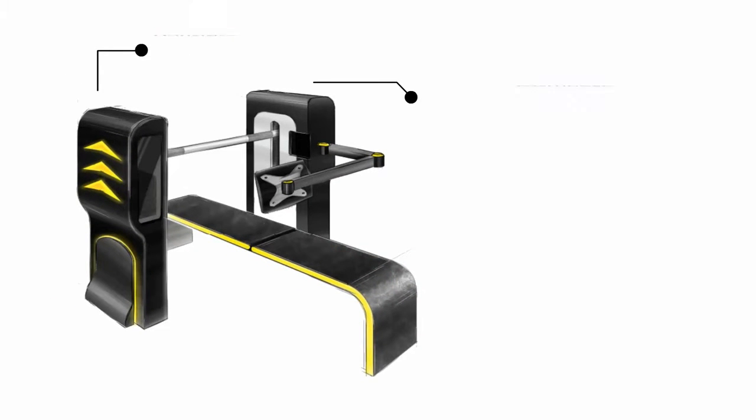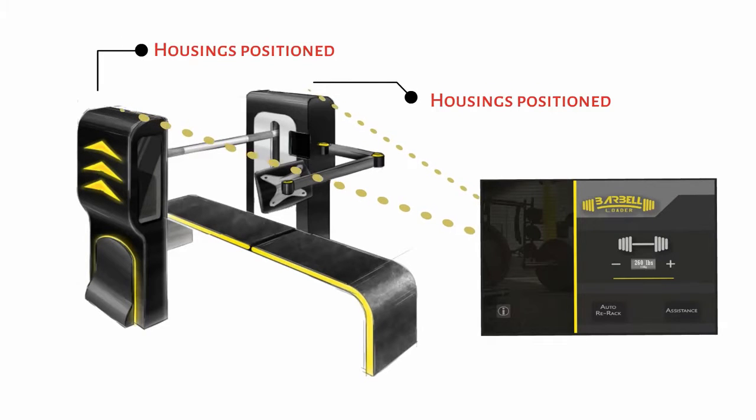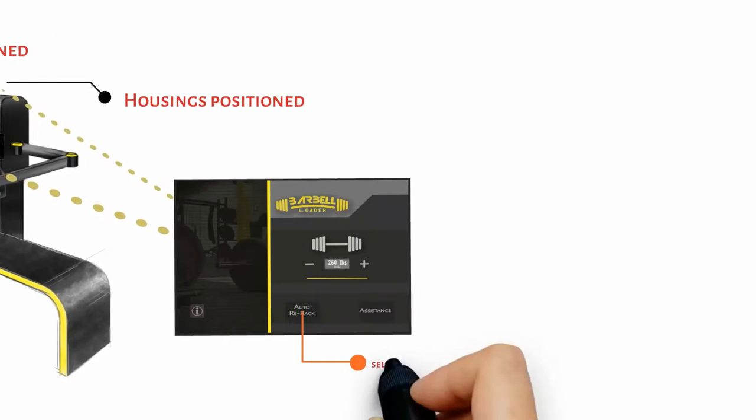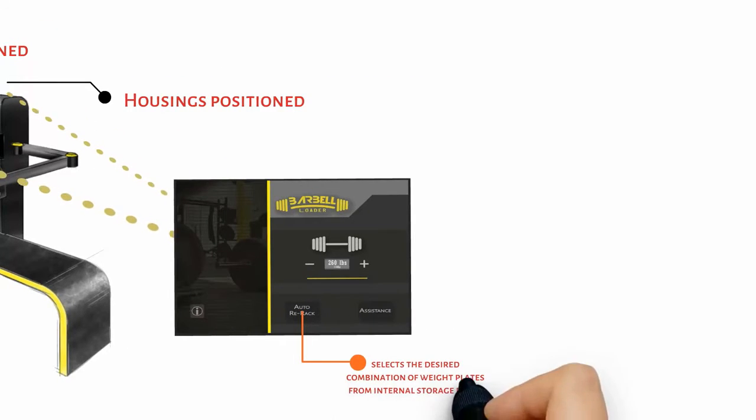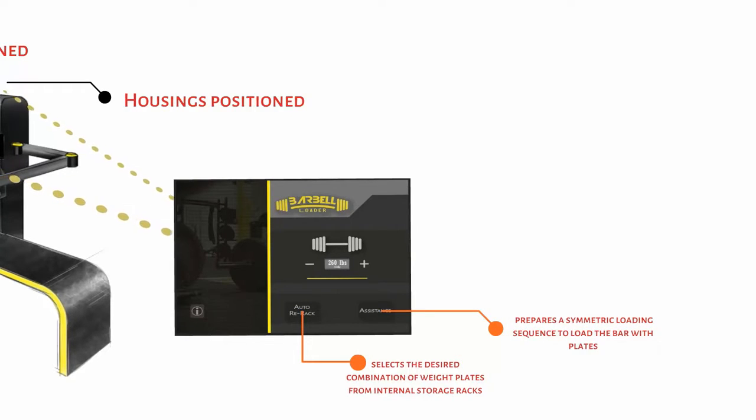The barbell loader provides two housings positioned at both ends of the barbell. It responds to electronic controls and selects the desired combination of weight plates from internal storage racks, and prepares a symmetric loading sequence to load the bar with plates.